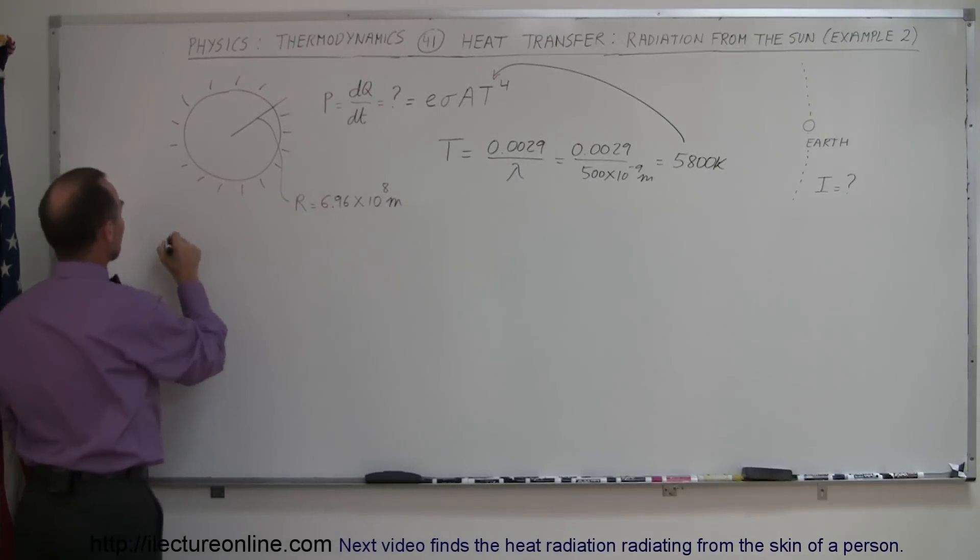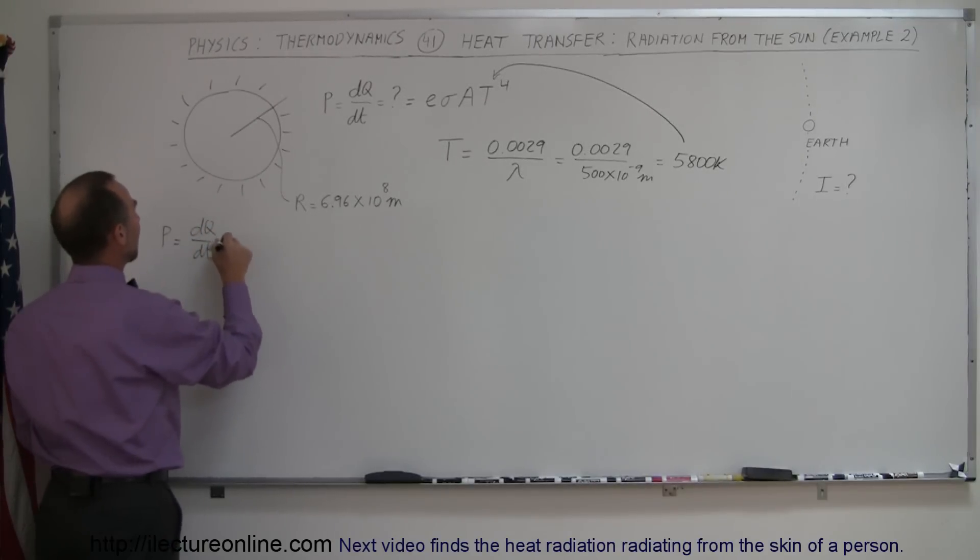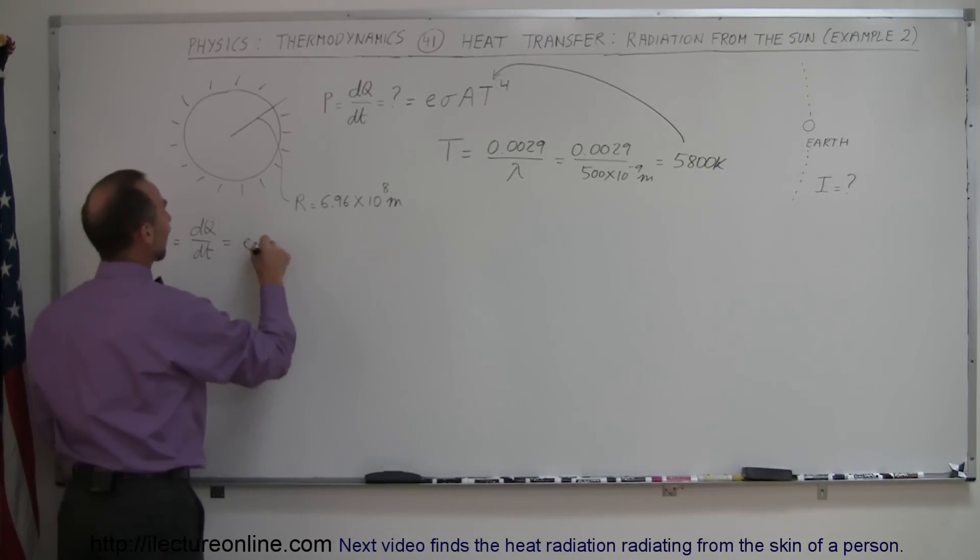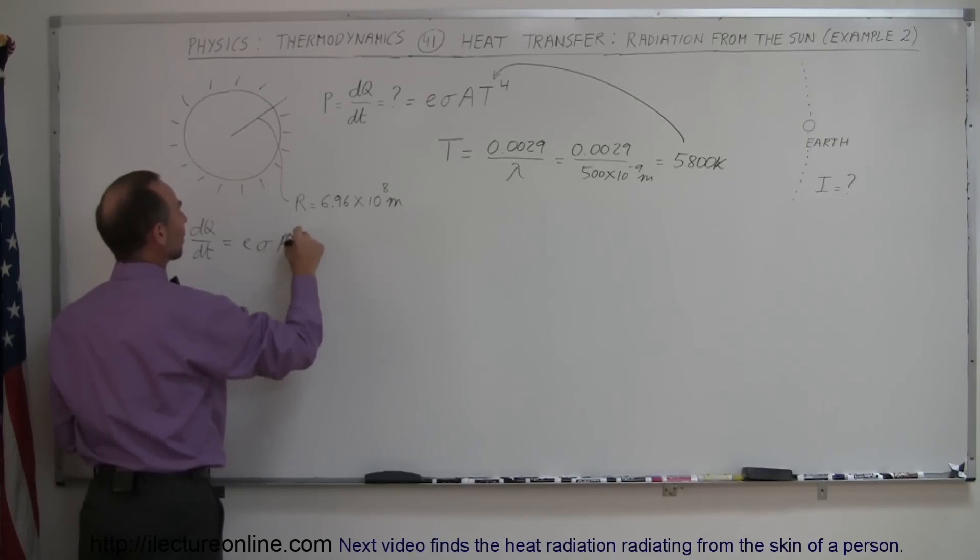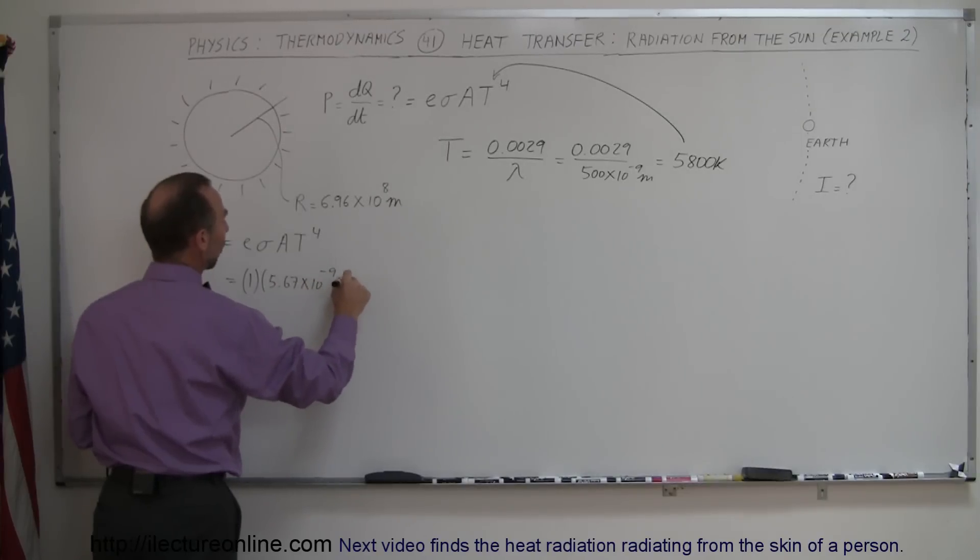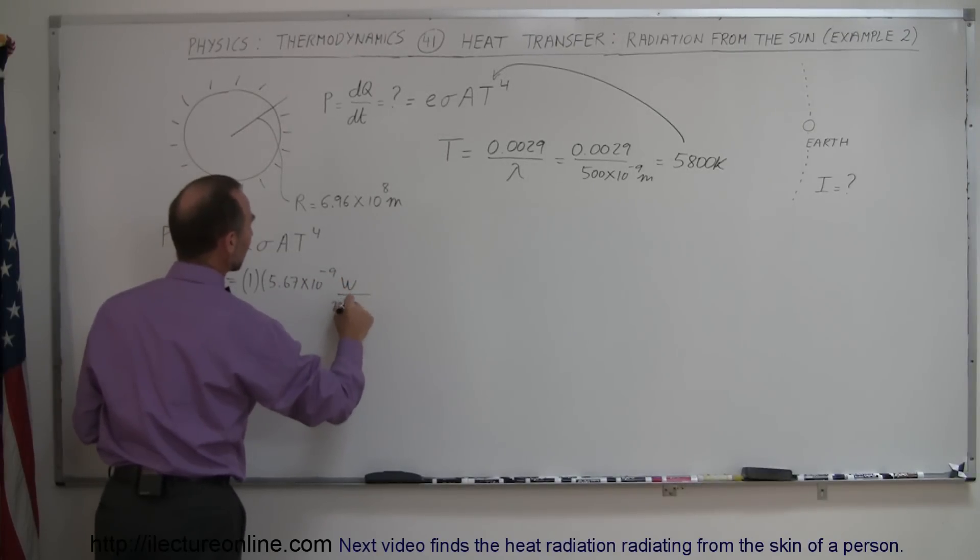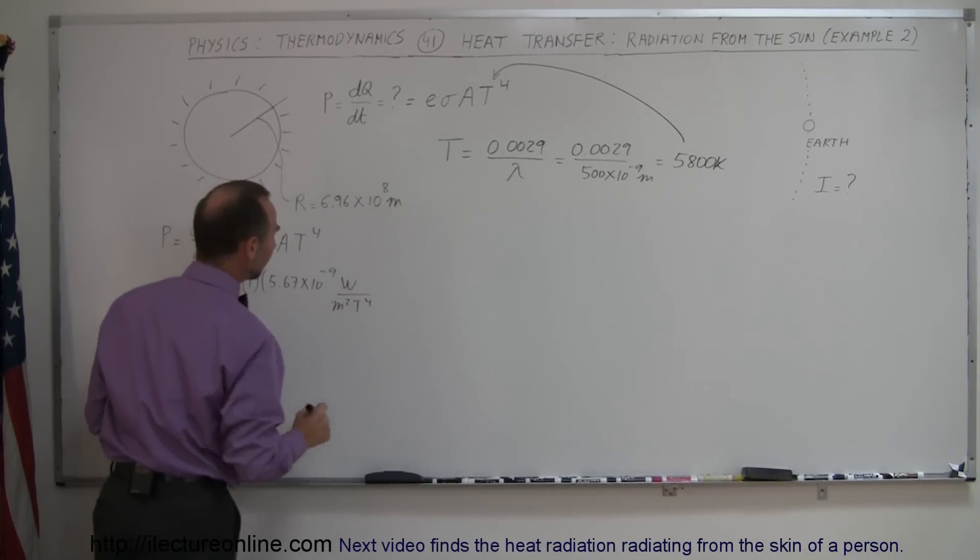So, coming back over here, we can then say that the power output of the sun, which is dQ/dt, which means the amount of heat per unit time, is equal to the emissivity, times sigma, times the surface area, times T to the fourth power. So, that would be about 1. Sigma is 5.67 times 10 to the minus 8 watts per square meter times temperature to the fourth power.